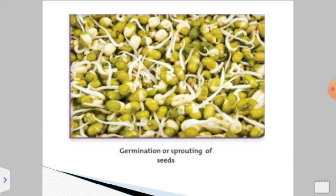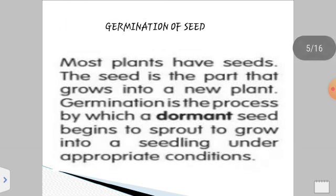In this picture you can see the germination of seeds, or the sprouting of seeds. What is germination of seeds? We know that most plants have seeds. The seed is the part that grows into a new plant. Germination is the process by which a dormant seed begins to sprout and grow into a seedling under appropriate conditions. This is the definition of the word germination.